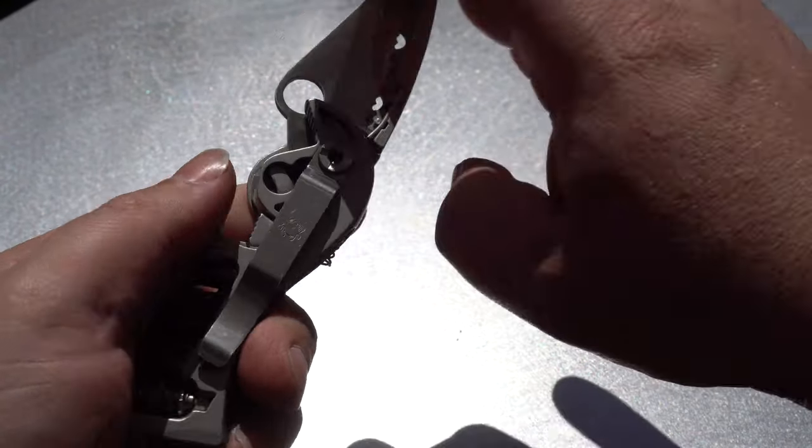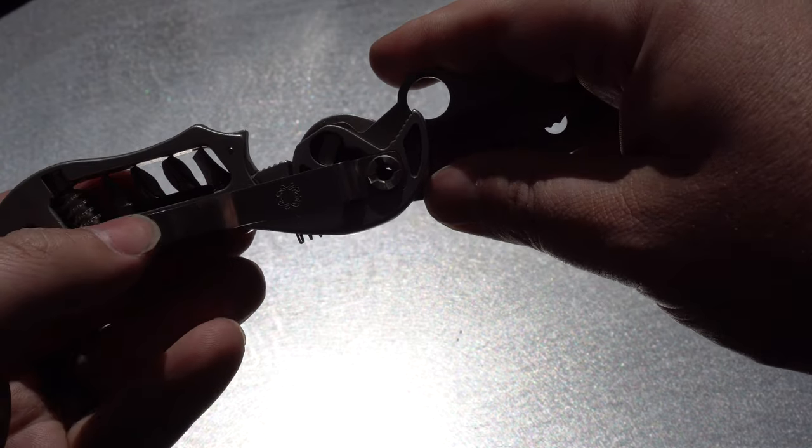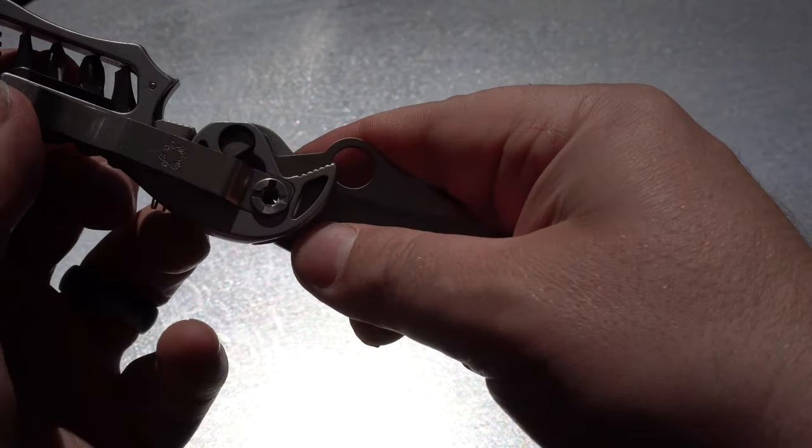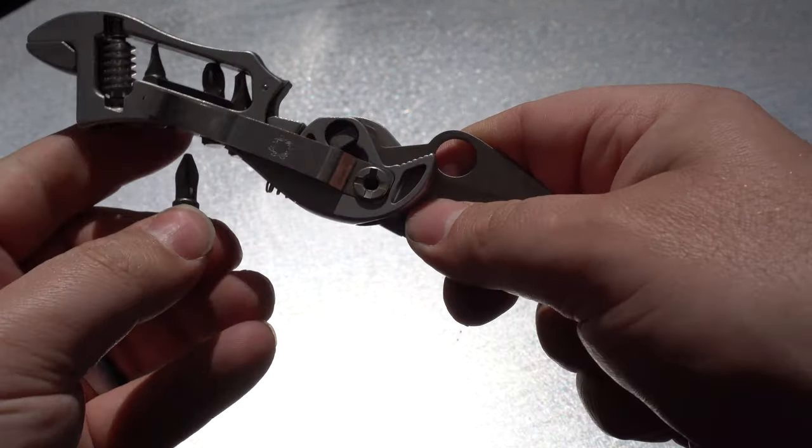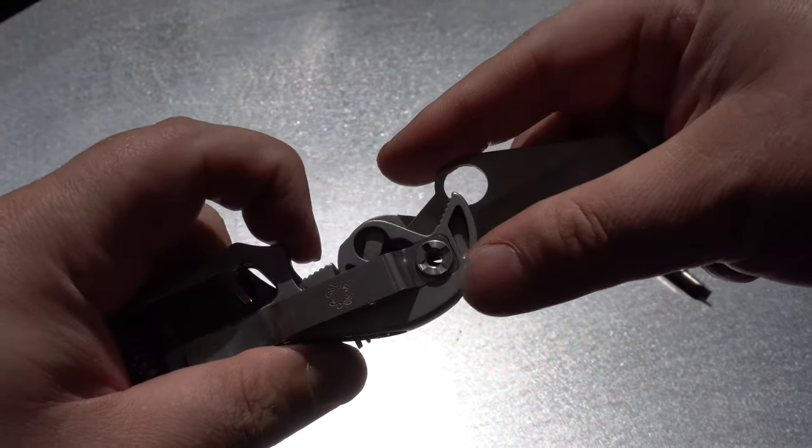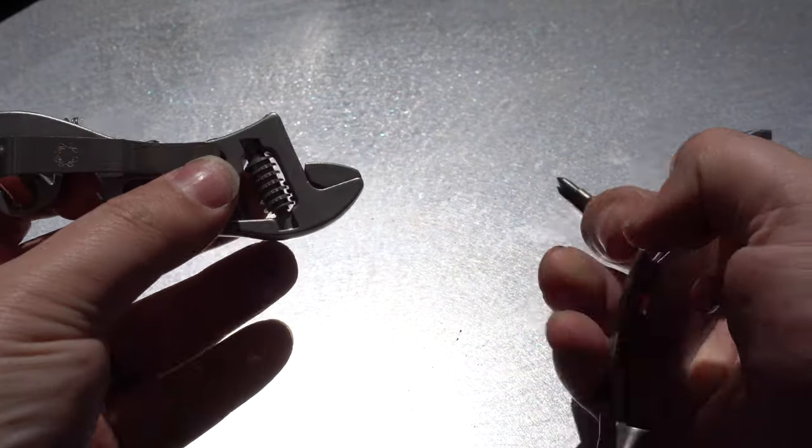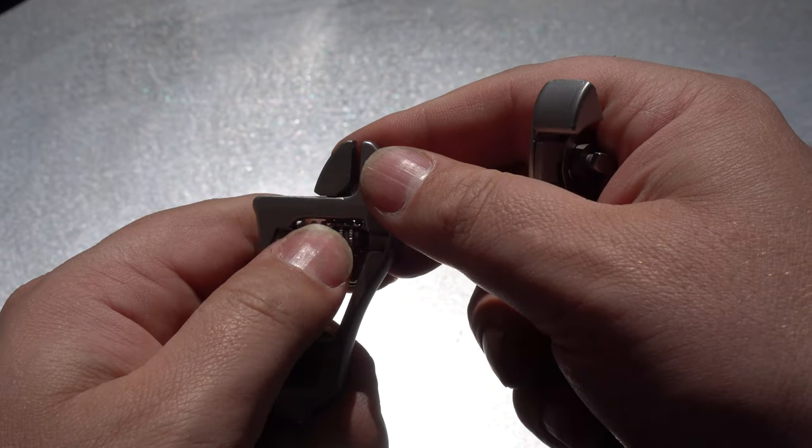I'm not sure if they all came with the sheath or if it was an accessory, but the sheath doesn't hold any additional bits or anything else. If you wanted to carry any other quarter inch drive bits, you have to do so in a separate pouch. So one of the great things about the SpiderWrench is that it comes apart.